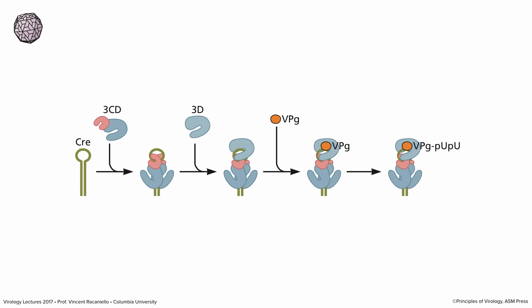The first thing during viral RNA synthesis is that a molecule of VPg gets two uridines added to it — we call that uridylation. VPg is uridylated on the CRE structure in the genome, which is simply a stem loop structure that can be present pretty much anywhere in the genome. It's recognized by the RNA polymerase, and a molecule of VPg is brought in. The polymerase adds two U's to it using the all-A loop at the tip of the CRE structure as template. VPg-UU is the primer for RNA synthesis, so this is a primer-dependent enzyme.